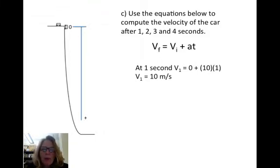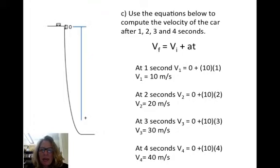Now we can continue this for two seconds, three seconds, four seconds, and you can see that in each successive second the speed is increasing. So that's a constant increase in velocity or a constant acceleration, and that's what the 10 is - the constant acceleration. So these will be the values: 10, 20, 30, 40 meters per second.